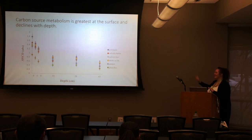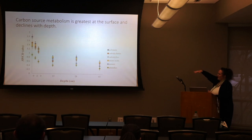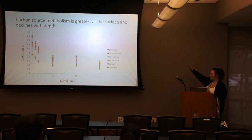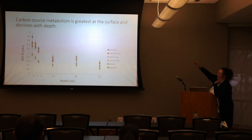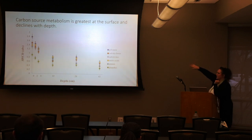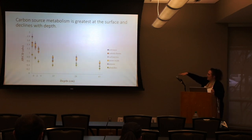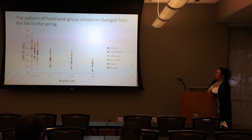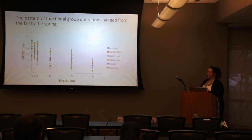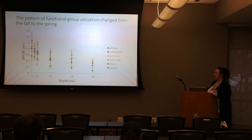To further analyze this, I broke down each of the six functional groups and looked across depths. At the soil surface, polymers and carbohydrates were very important and metabolized well, but as we get deeper in the soil profile that shifts — carboxylic acids and amino acids become more important. In the spring sampling that pattern shifted again, with carbohydrates, carboxylics, and amino acids all being important at shallower depths. This shows that cover crops are causing shifts in metabolism and usage of these carbon sources.